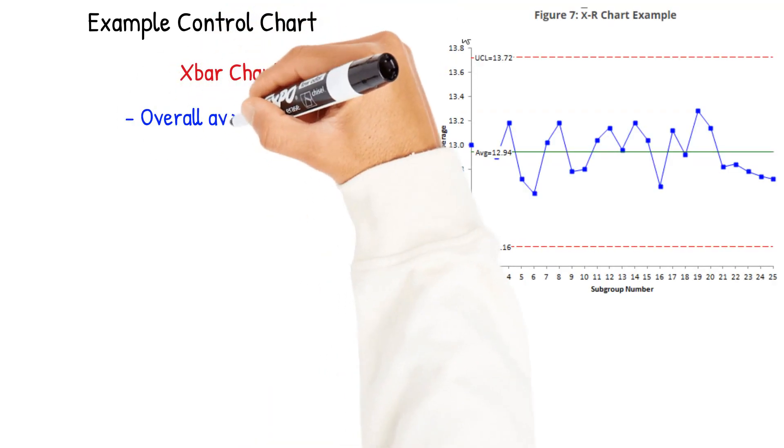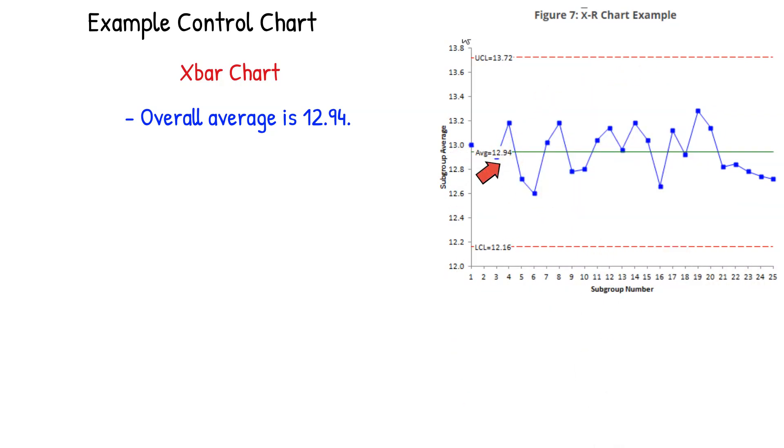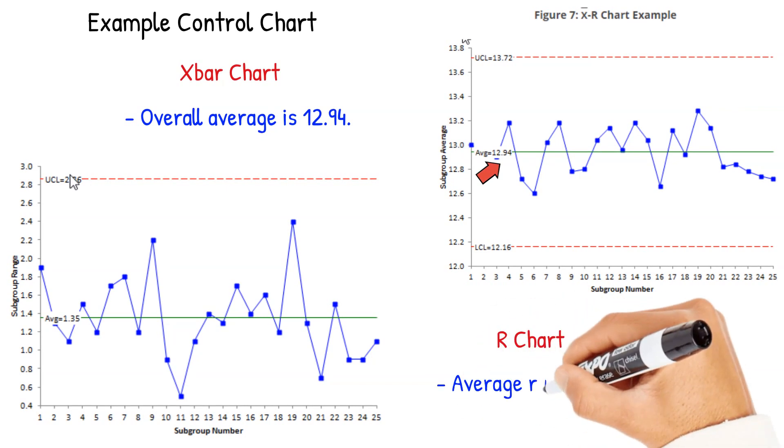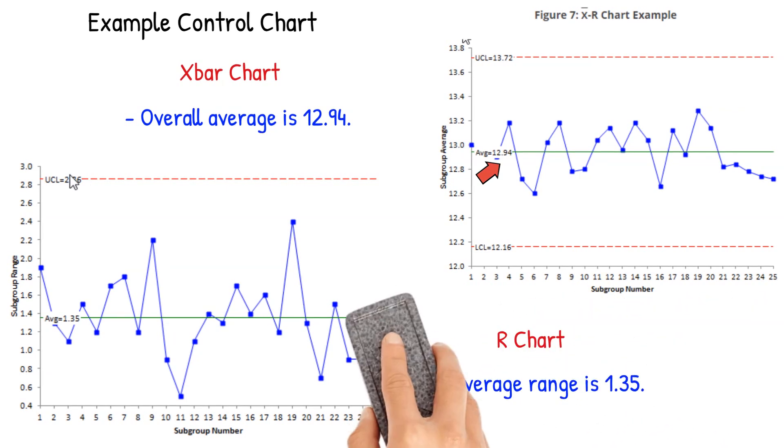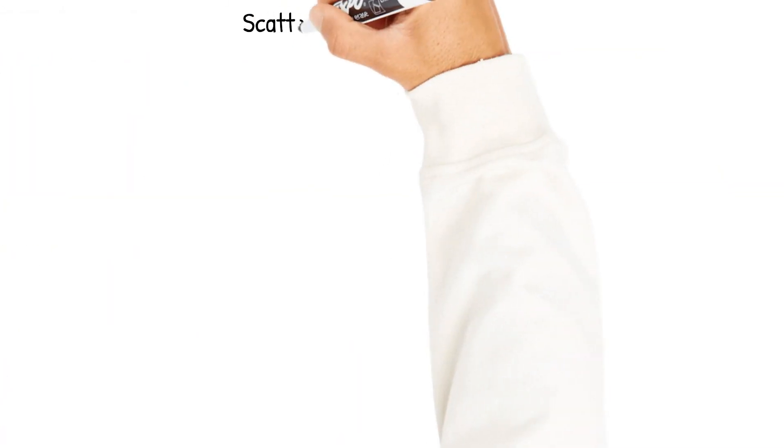Here's an example of an X bar and R chart. Overall average on this X bar chart is 12.94. You plot the data, you have the control limits, and you can see it's in control. You also have the range chart. Here the average range is 1.35 and again, nothing's beyond the limits. Everything's in control.